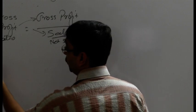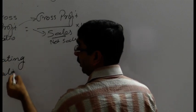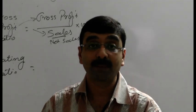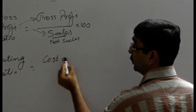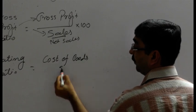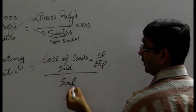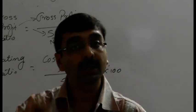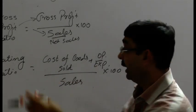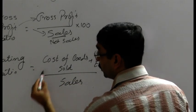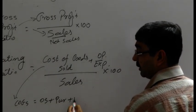Moving to the operating ratio: this is a comparison of operating expenses of the business with net sales. The formula is cost of goods sold plus operating expenses, divided by sales, multiplied by 100. Sales is compared with cost of goods sold and operating expenses. The cost of goods sold can be determined with opening stock plus purchases.